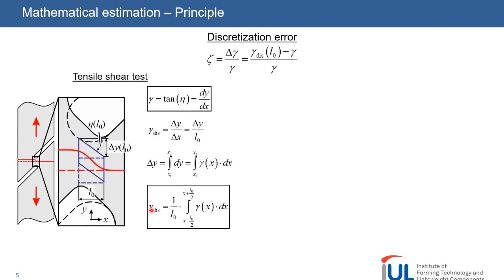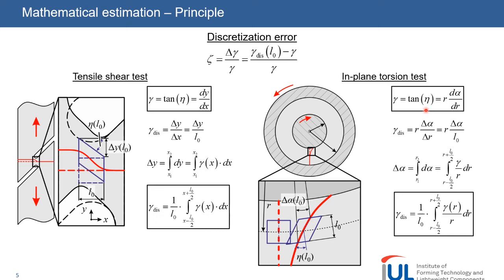For the in-plane torsion test, the equations look similar. The local slope of the radial line is R dα divided by dr, where α is the rotation angle. The discrete strain for an element of size L0 is calculated by the given integral over the length L0 divided by L0. Gamma from x and from R can be easily calculated from the specimen geometry and from the stress-strain relation, which is defined in the following.